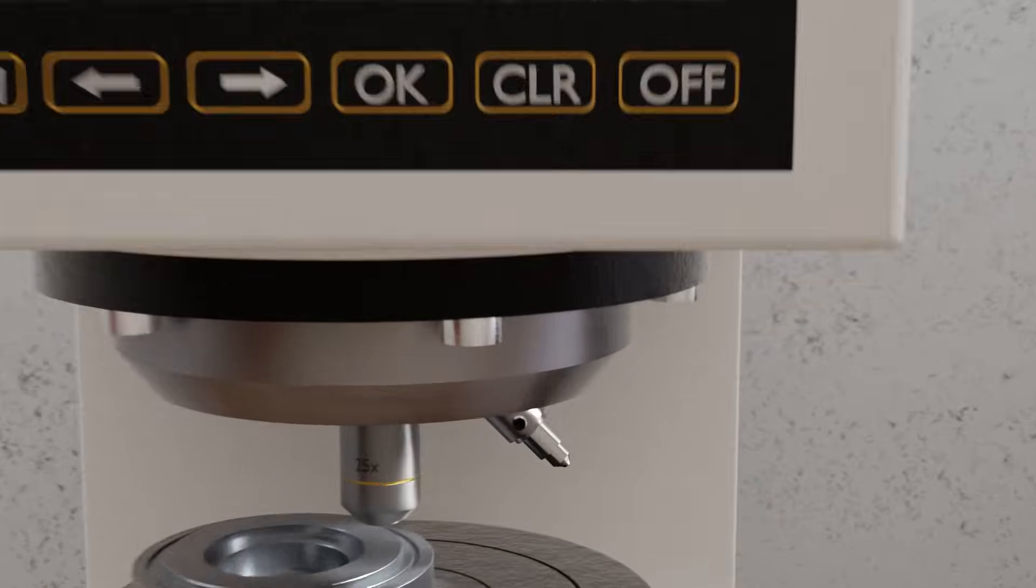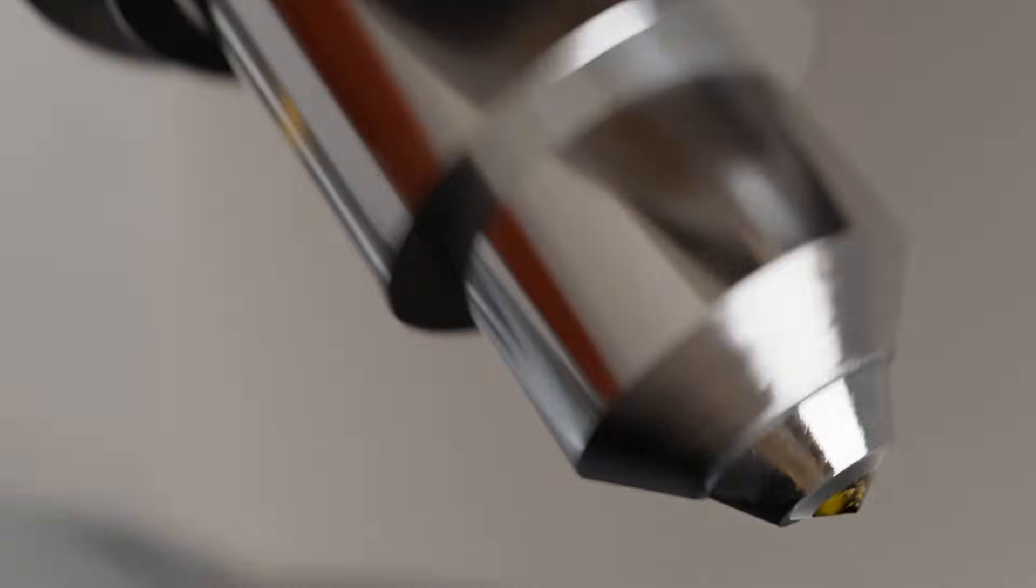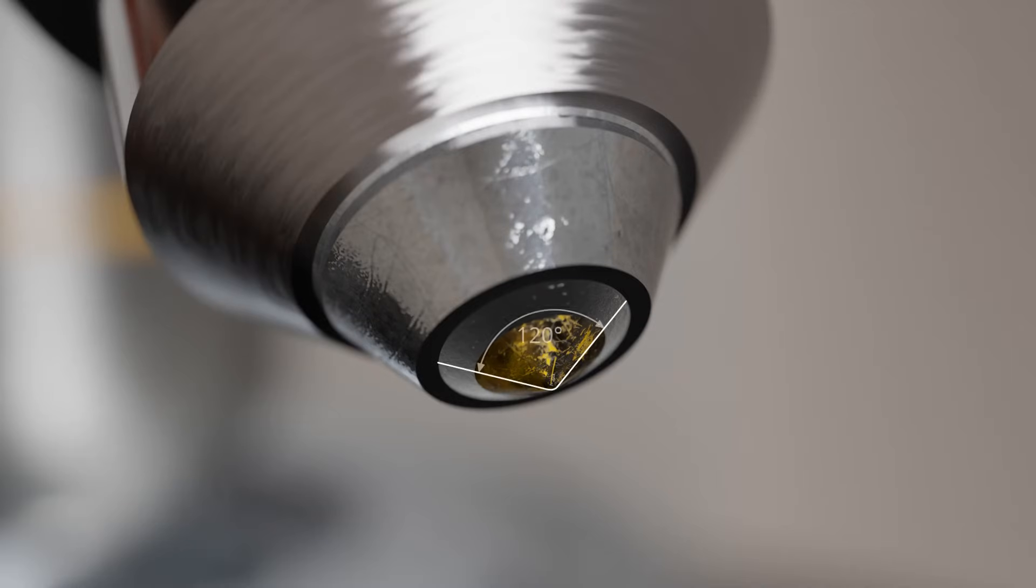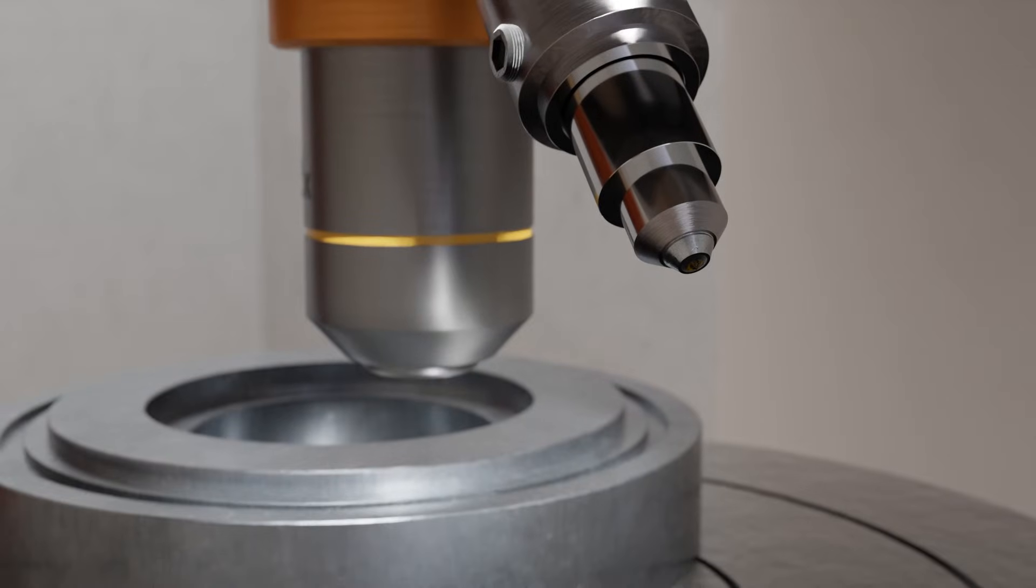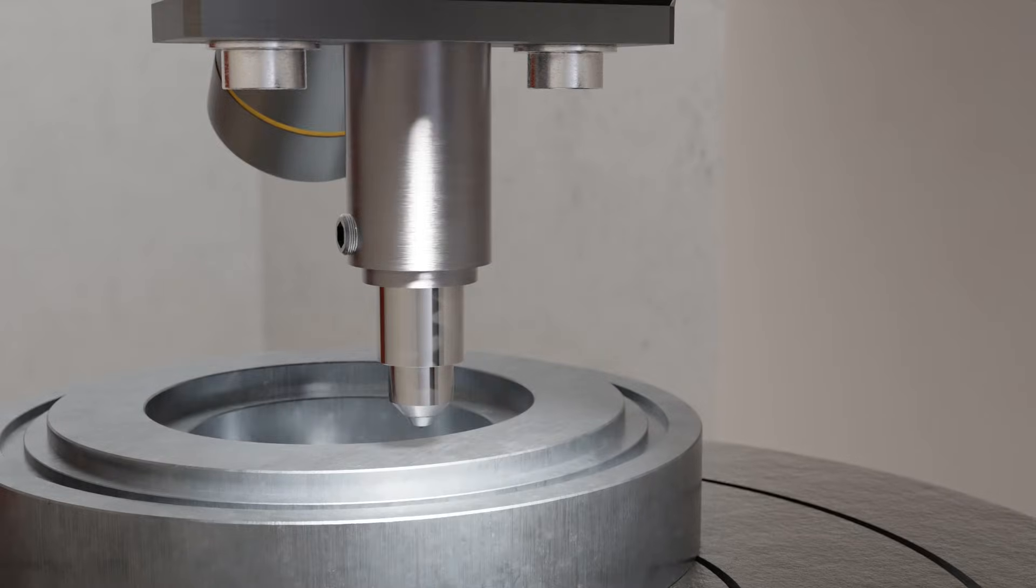The indenter used is either a cemented carbide ball or a rounded diamond cone with a tip angle of 120 degrees and a tip radius of 0.2 millimeters. The deeper the indenter penetrates the material under a given force, the softer the material. A key advantage of this method is that the indentation depth can be measured directly using the traverse path of the testing machine, eliminating the need for manual evaluation under a microscope. This makes the process highly suitable for automation in mass production.